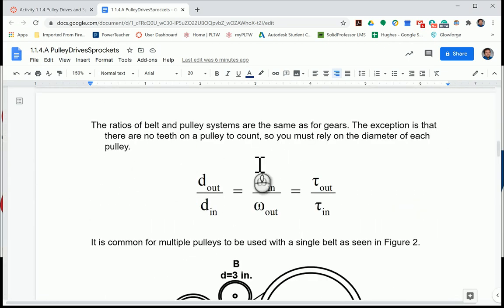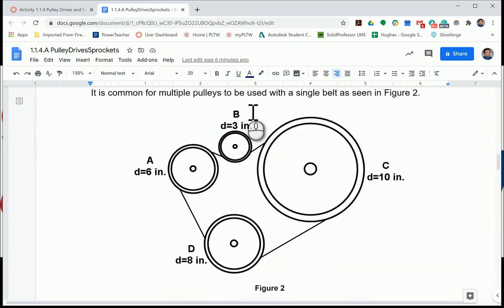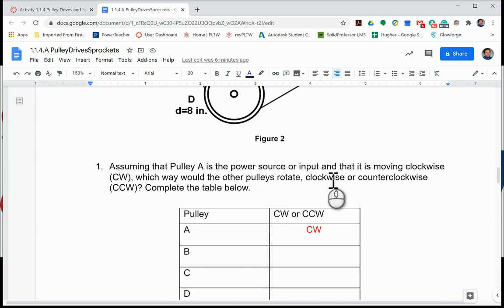With belts and pulley systems, there are no teeth, but we must rely on the diameter of each pulley, the angular velocity, and the amount of torque being used. It's very common for multiple pulleys to be used with a single belt, and here's what we have in Figure 2. We're going to assume pulley A is the power source or input, and it's moving clockwise. Which way would the other pulleys rotate, clockwise or counterclockwise? Complete the table below.